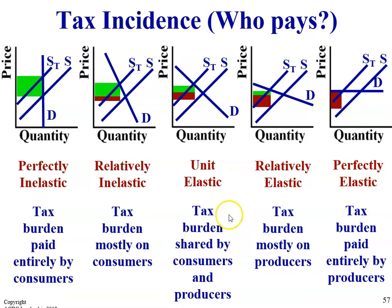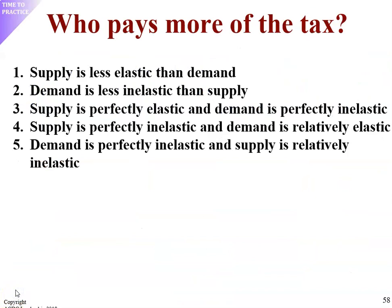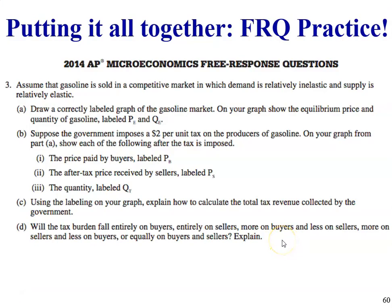Who ends up paying more of the tax is determined by elasticity. If demand is perfectly inelastic, the tax burden would be paid entirely by consumers. If it's relatively inelastic, consumers bear most of the burden. If it's unit elastic, the burden is shared equally. If demand is relatively elastic, the tax falls mostly on producers, and if it's perfectly elastic, the tax is paid entirely by producers. Pause the video and see if you can answer these. Here's a practice FRQ.